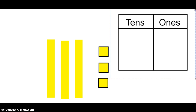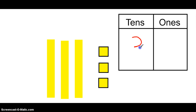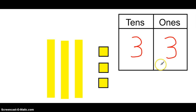If I had this, I could count and say I have three tens longs. So I'm going to put a three in the tens. And there are three ones. I have the number 33.